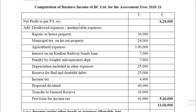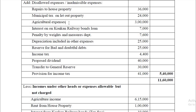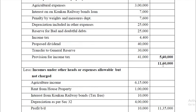Net profit is the starting point for computation of business income. All disallowed or inadmissible expenses and losses should be added back: repairs to house property, municipal tax, agriculture expenses related to exempt income, interest on Concam Railway Bonds loan, any penalty, depreciation of 25,000 included in other expenses, reserve for budgets, income tax, proposed dividend, transfer to general reserve, and provision for income tax. The total additions come to 5 lakh 40,000, giving 11 lakh 60,000.